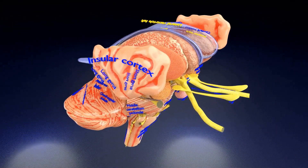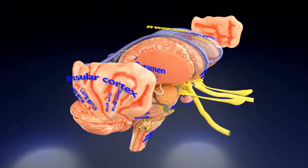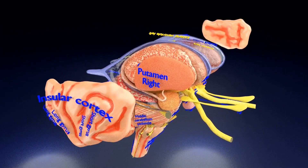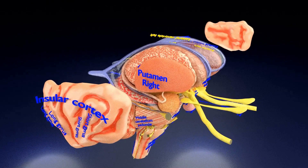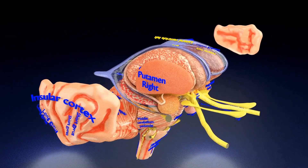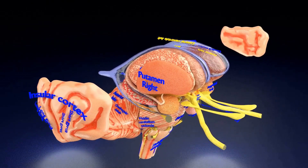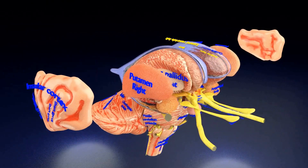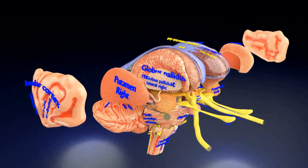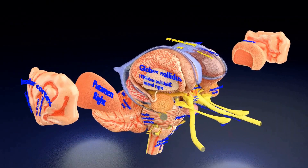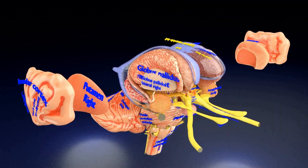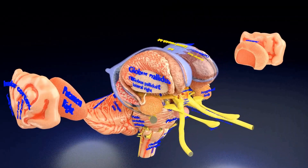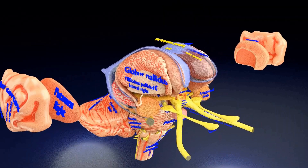The structures you will now see are parts of the basal ganglia — large grey masses of nerve cells called nuclei. Four basal ganglia can be distinguished: the putamen, the globus pallidus, the caudate nucleus, and the substantia nigra.